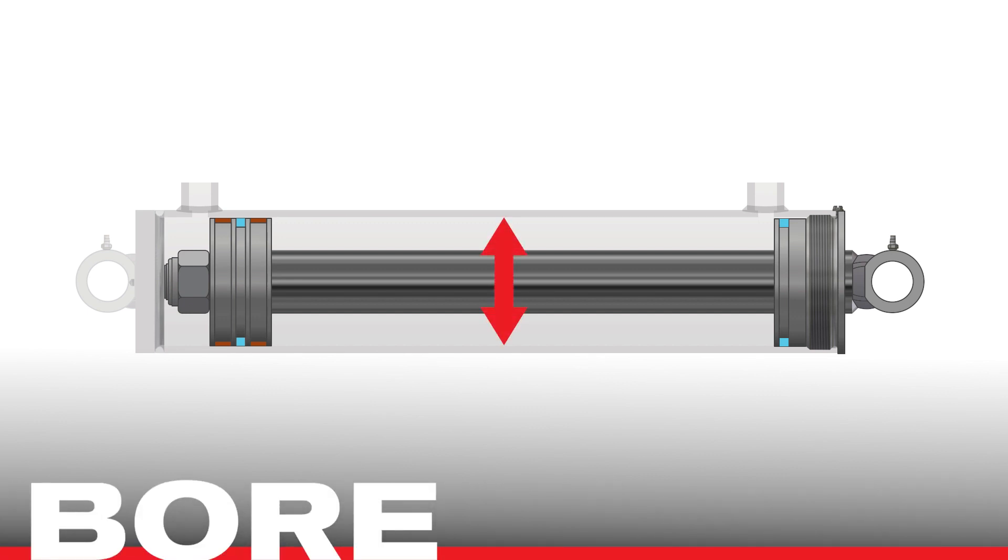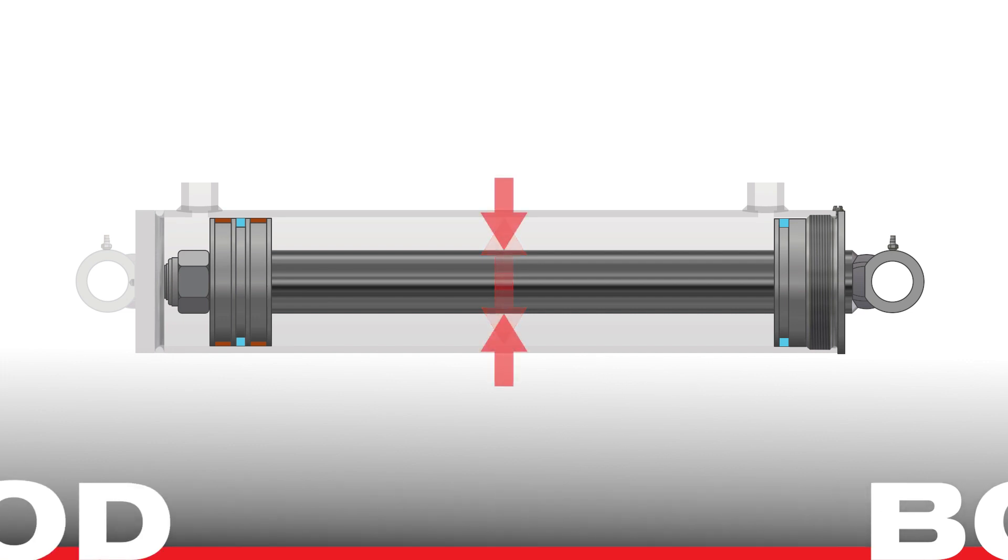Bore is the inside diameter of the cylinder tube, also known as the barrel or case. Rod is the diameter of the piston rod. Typical rods are solid, but in the case of a hollow rod, the outside diameter is used.